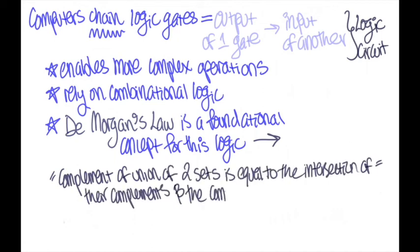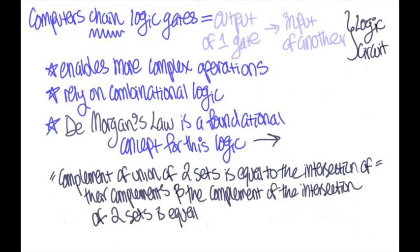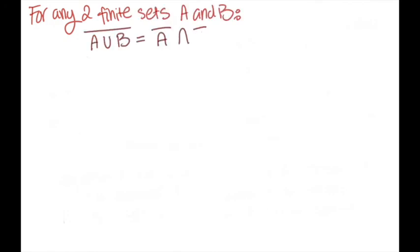And the complement of the intersection of two sets is equal to the union of their complements, represented like this in set theory. Where for any two finite sets of A and B, we have the De Morgan's law of union and the De Morgan's law of intersection.